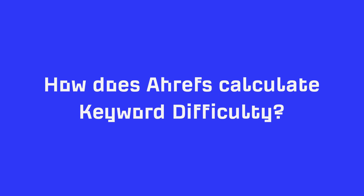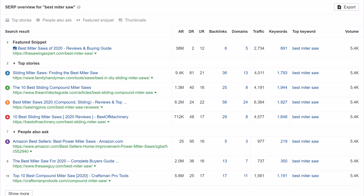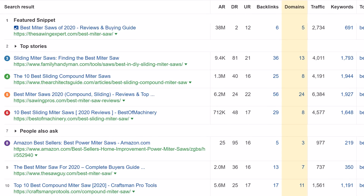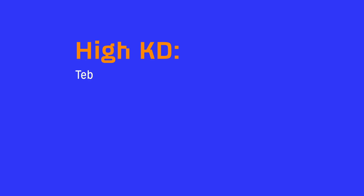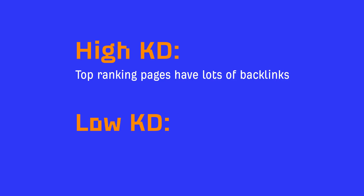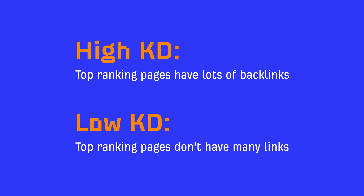So how does Ahrefs calculate keyword difficulty? Simply put, we take a weighted average of the number of referring domains pointing at the top 10 pages. So if a keyword has a high KD, the ranking pages likely have lots of links pointing at them. In contrast, low KD scores tell us that the top ranking pages don't have many links. Since ranking for keywords usually relies on backlinks, KD acts as a good proxy to ranking difficulty. But there are other factors we have to consider, so let's walk through these with practical examples.